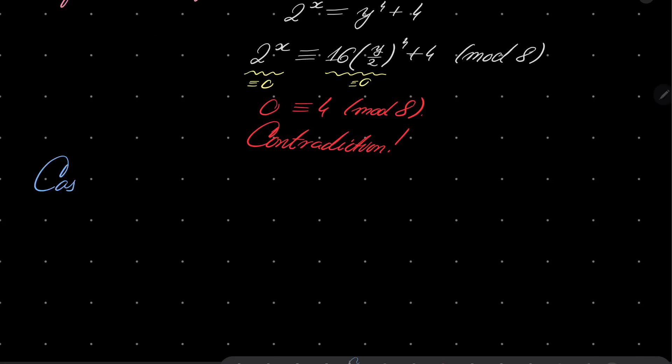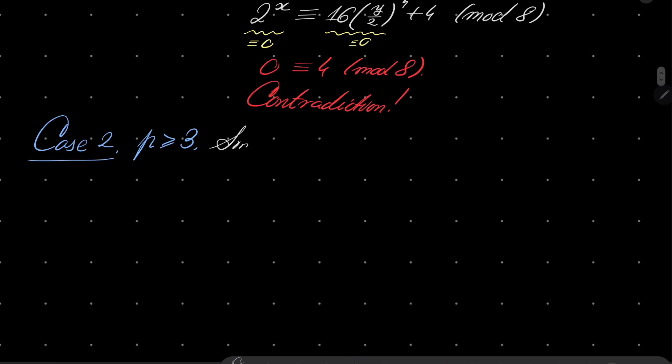Now consider second case where p is greater than or equal 3. Notice that since p^x = y^4 + 4, y must be odd. It must be odd, because if it were to be even, then we'll have even plus even is even, but p is a prime and every prime greater than 2 is odd.